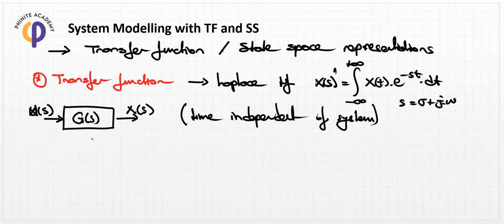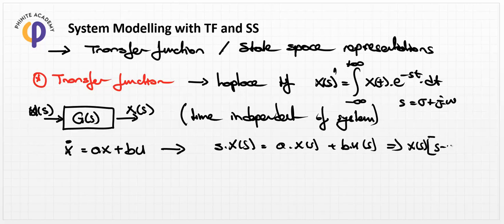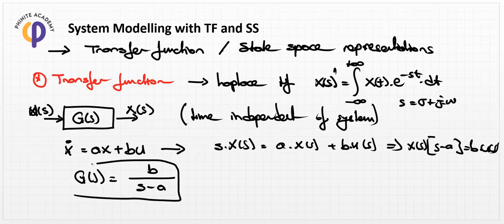If we have a system like the standard equation where x-dot equals ax plus bu, we can take the Laplace transform to get sX(s) equals aX(s) plus bU(s). Rearranging, X(s)(s - a) equals bU(s), so the general transfer function G(s) can be described as b divided by (s minus a).